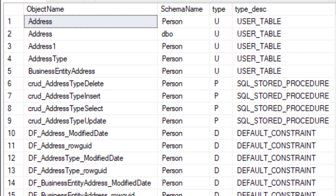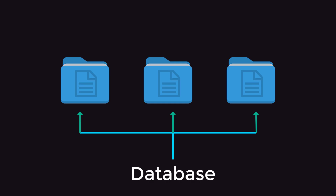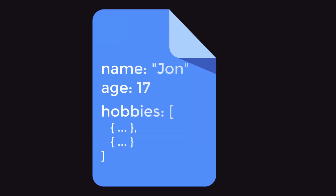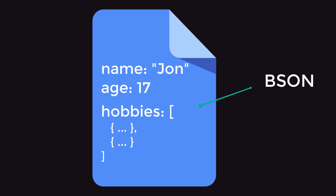Unlike traditional relational databases, MongoDB is document-oriented. A single database can consist of multiple collections, each collection can contain multiple documents, and each document would contain fields where the fields are key-value pairs. The data stored inside of these documents is JSON-like data, but to be specific, it is binary JSON.